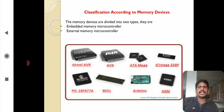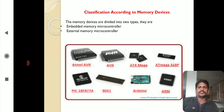Specific examples of microcontroller chips include AVR ATmega, ATX Mega, ATmega 328P, PIC 18F877A, and 8051. Also Arduino and ARM. These are different types of microcontroller chips, divided depending upon the memory devices used.